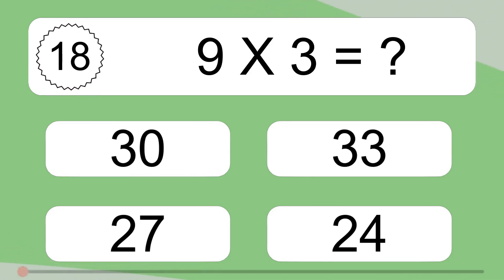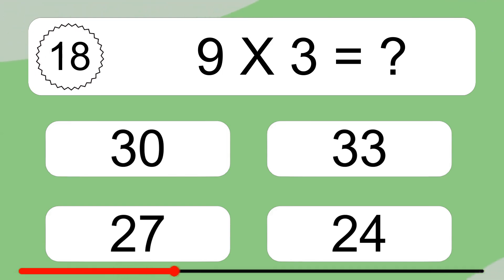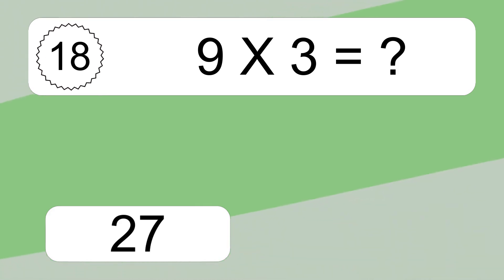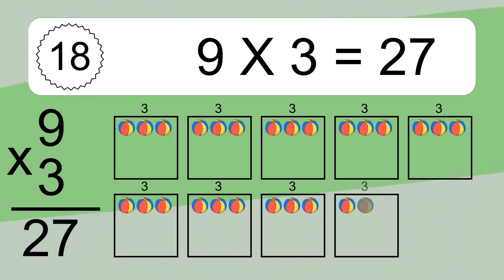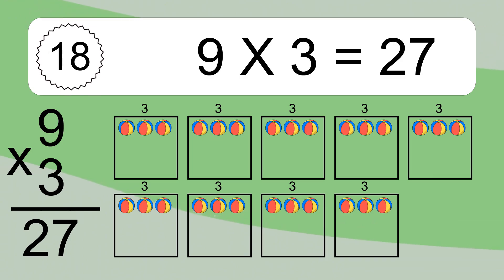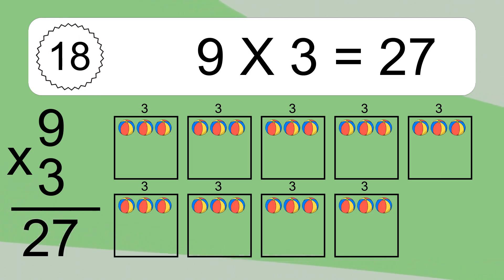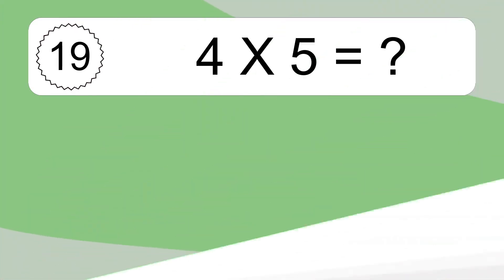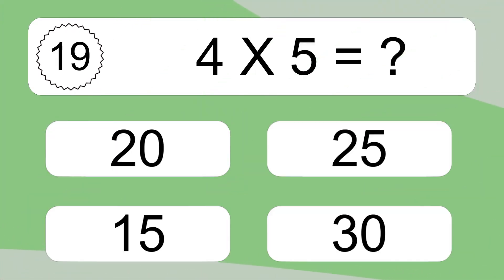9 times 3 equals what? 9 times 3 equals 27. You will have 9 times 3 balls. This equals 27 balls.